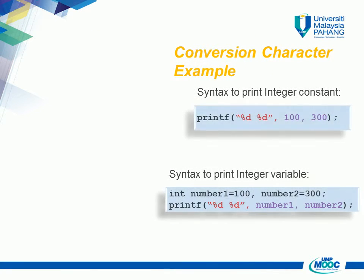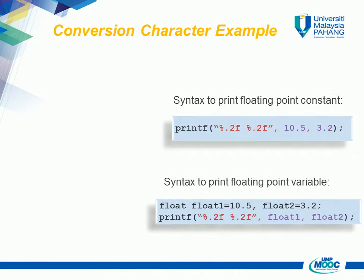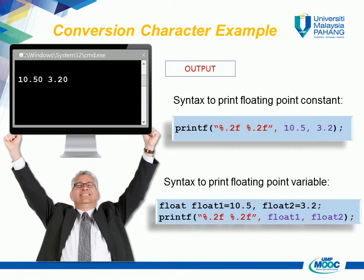Conversion Character Example — Syntax to print integer constant: printf("%d %d", 100, 300). Syntax to print integer variable: int number1 = 100, number2 = 300; printf("%d %d", number1, number2). Output: 100 300. Syntax to print floating point constant: printf("%.2f %.2f", 10.5, 3.2). Syntax to print floating point variable: float float1 = 10.5, float2 = 3.2; printf("%.2f %.2f", float1, float2). Output: 10.50 3.20.